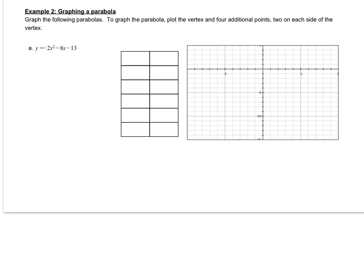In example 2, we are going to graph the parabola. In order to graph it, we want to plot the vertex and 4 additional points, 2 on each side of the vertex.